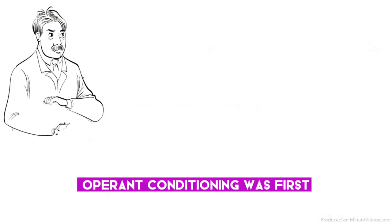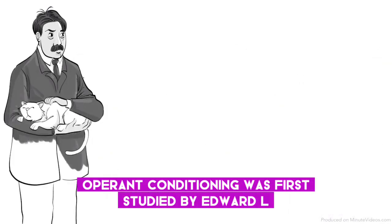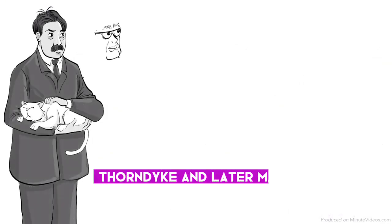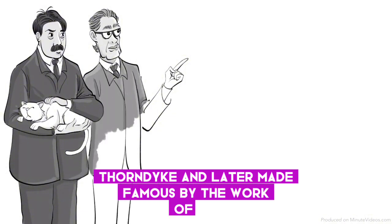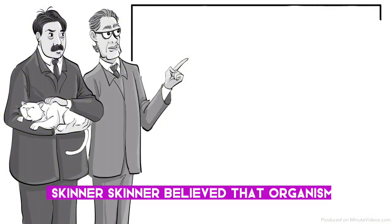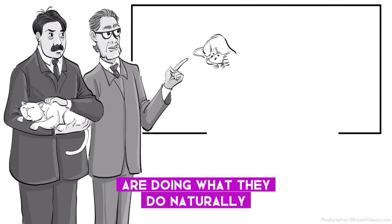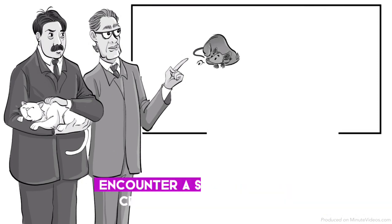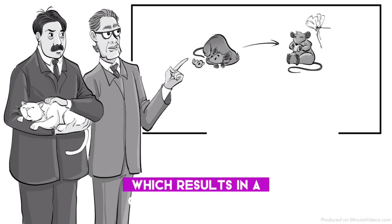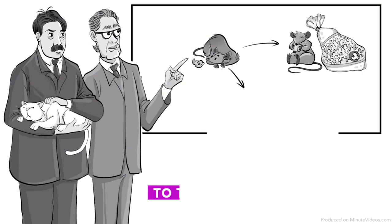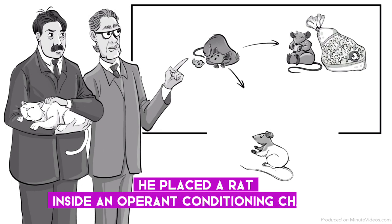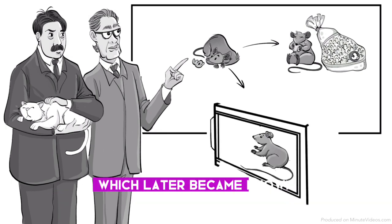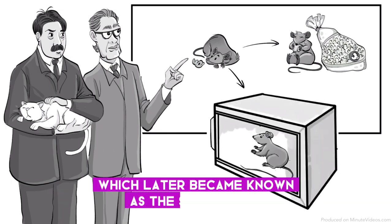Operant conditioning was first studied by Edward L. Thorndike, and later made famous by the work of B.F. Skinner. Skinner believed that organisms are doing what they do naturally until they accidentally encounter a stimulus that creates conditioning, which results in a change in behavior. To test this, he placed a rat inside an operant conditioning chamber, which later became known as the Skinner box.